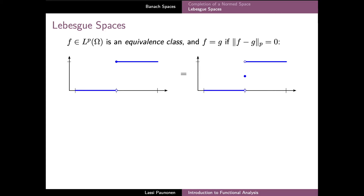By definition, as we recall, a norm is only allowed to have the zero value for the unique zero element of the vector space. On the other hand, the basic properties of integrals tell us that the P-norm will always have the zero value, for example, for any function which only has non-zero values at finitely many points. Because of this, the P-norm will not be a norm unless we also consider these kinds of functions to be equal to the zero function in the space.